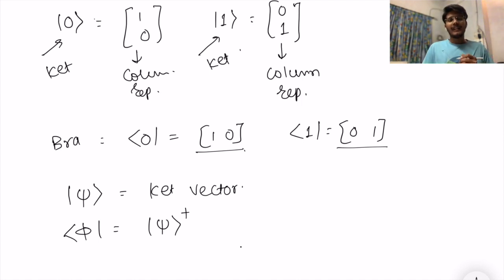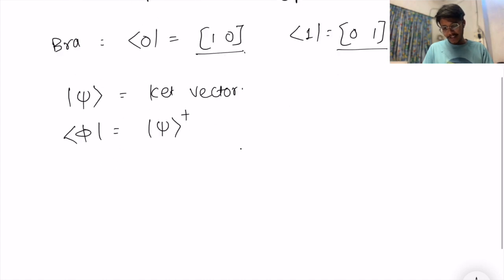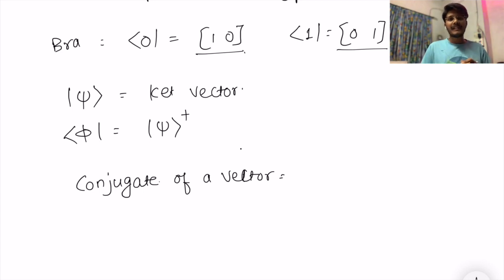In linear algebra we have a conjugate of a vector which simply means in a complex number we keep the real part the same and we just change the direction or the sign of the complex number. So that is called as conjugate of a vector.